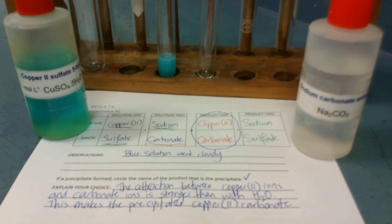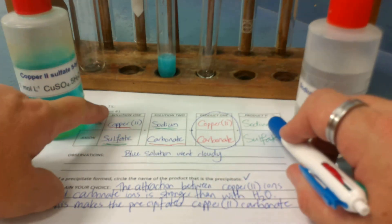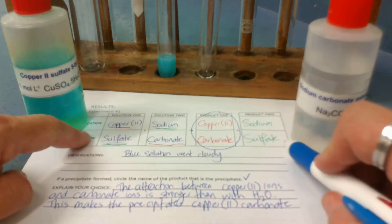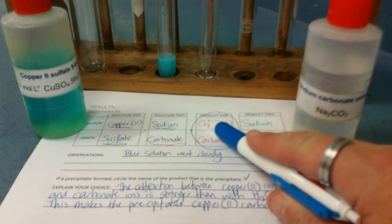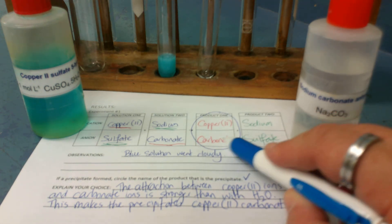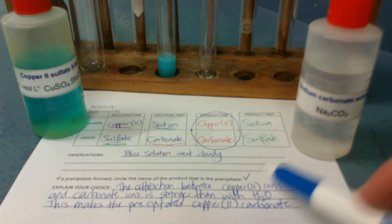Then, after you've done it, you can do the thing called the word equation. This is the word equation here. This is our word equation. Then, after the word equation, you circle the one that made the solid using the rules on the front first page. And then you explain it talking about attraction between ions.